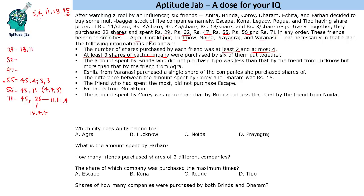29 can be written as 18+11. For 32: we can't use 11+11+10 because that would require splitting into too many parts. So 32 is 11+18+... wait, 11+18+3 equals 32. For 47: we can make it as 18+18+11. Note that 18 can be split as 11+4+3, and 11 can be split as 4+4+3.